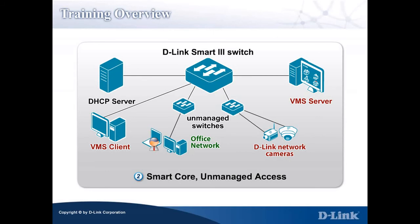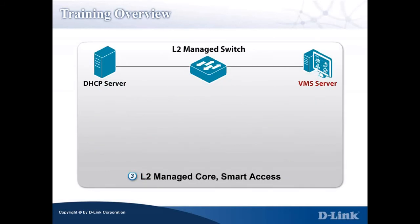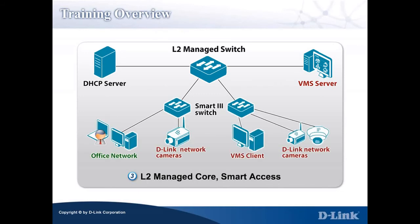Usage Scenario 3 is a two-layer network with a Layer 2 switch as core and the Smart 3 switch at the access layer. It is suitable for medium-sized businesses or medium to large branch offices with many users and surveillance devices.